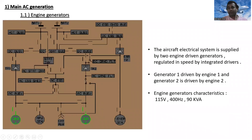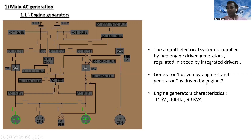The first topic is main AC generation. The aircraft electrical system is supplied by two engine-driven generators regulated in speed by integrated drive generators. Generator one is driven by engine number one and generator two is driven by engine number two. Engine generator characteristics are 115 volts, 400 hertz, and 90 kilowatt amperes.